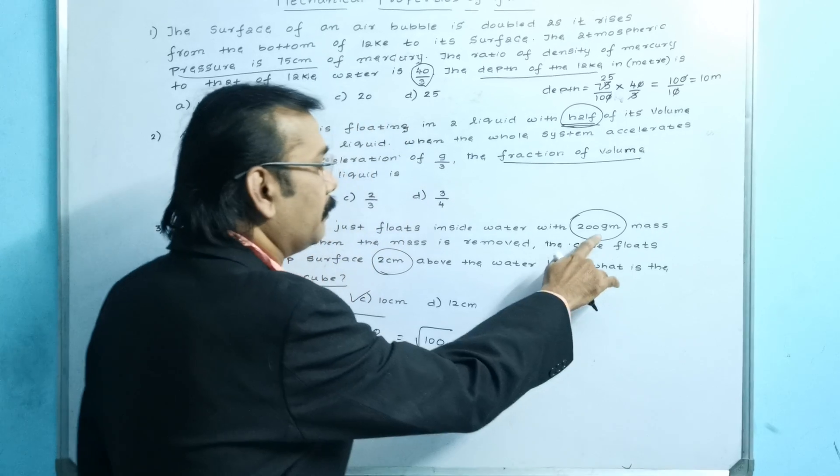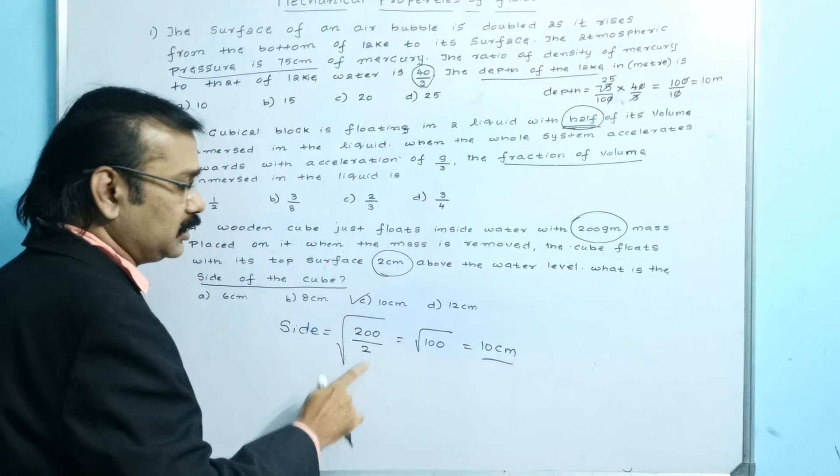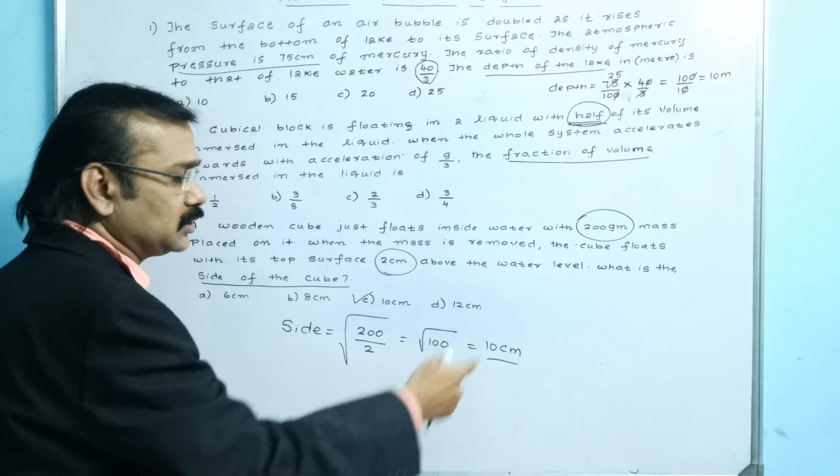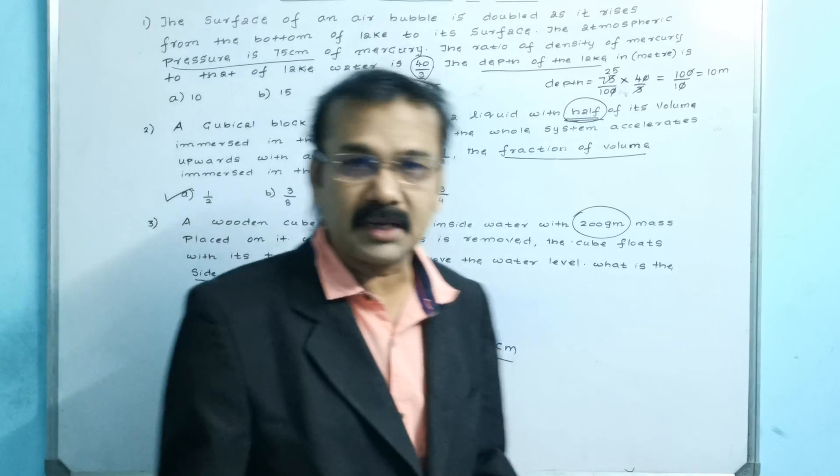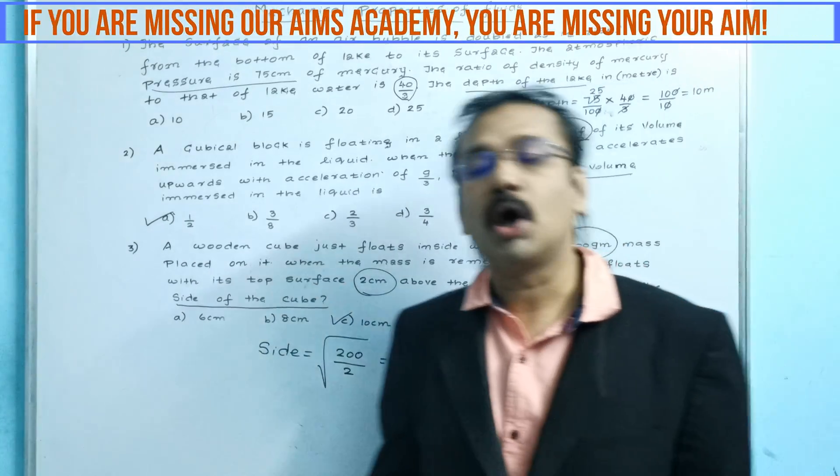What is the mass given? That is 200 grams divided by 2 centimeters. If you divide it, we get root 100. So root 100 is 10 centimeter. We get the side of the cube as 10 centimeter. Now you have learned the three magic tricks.